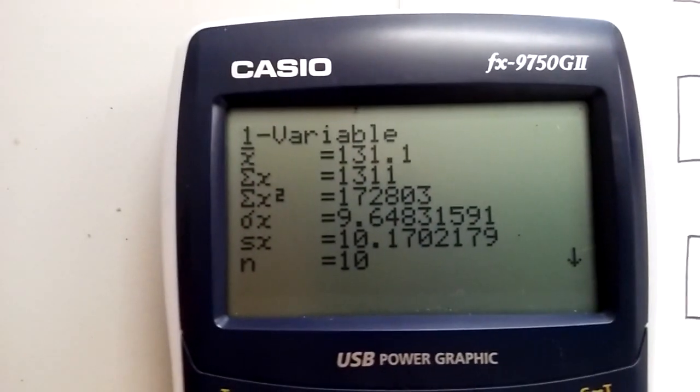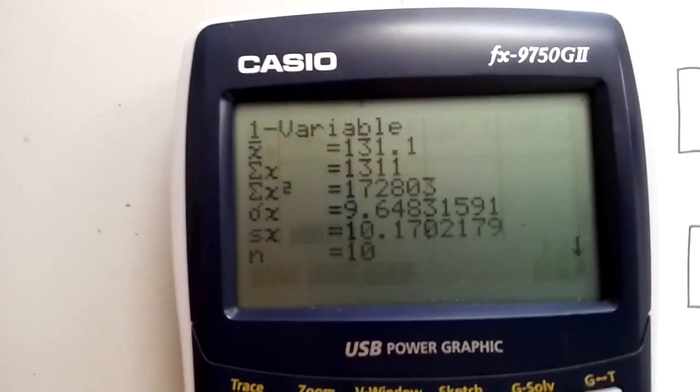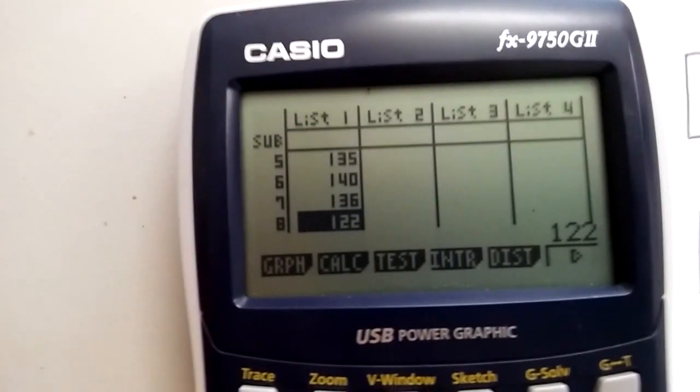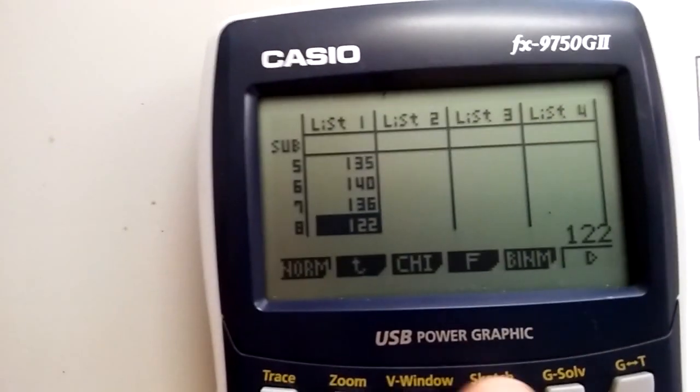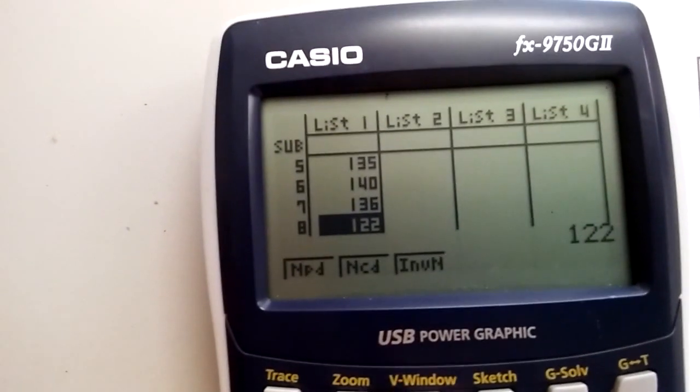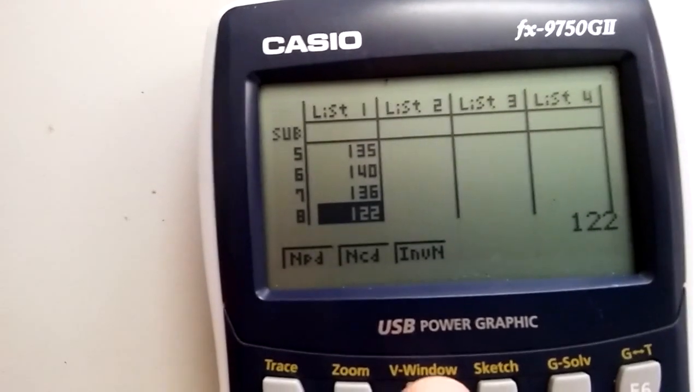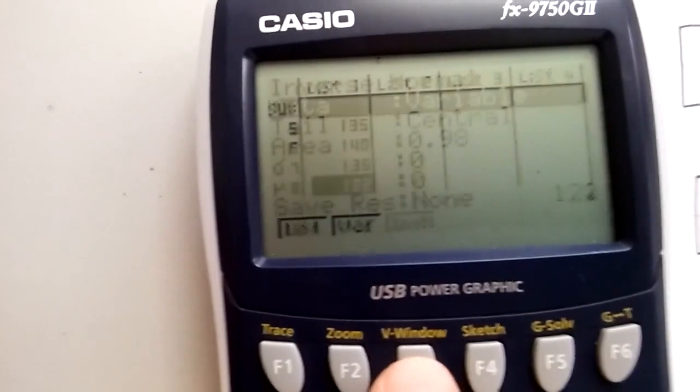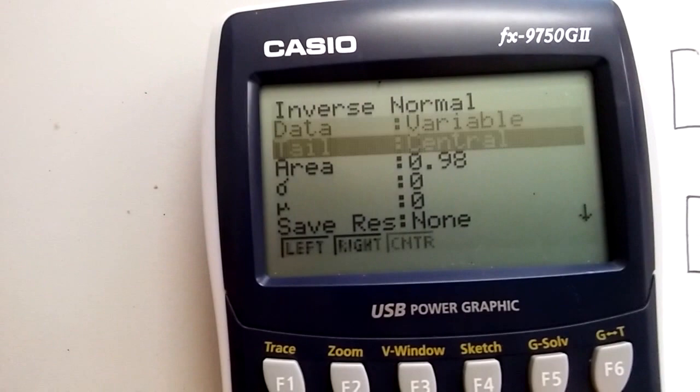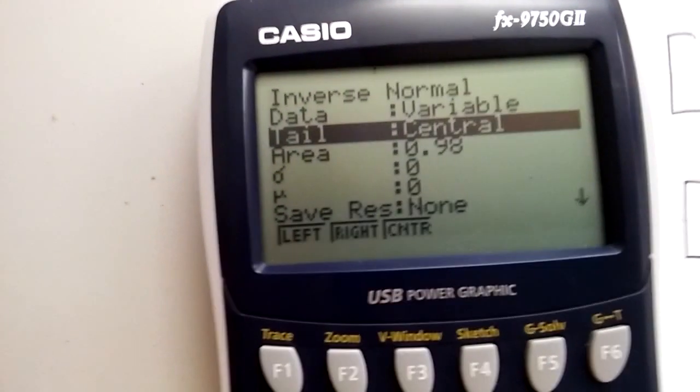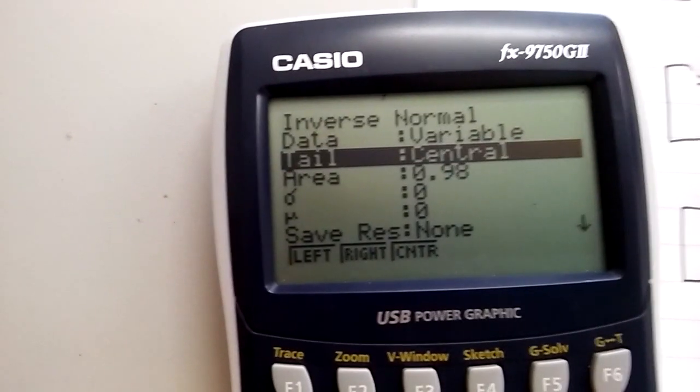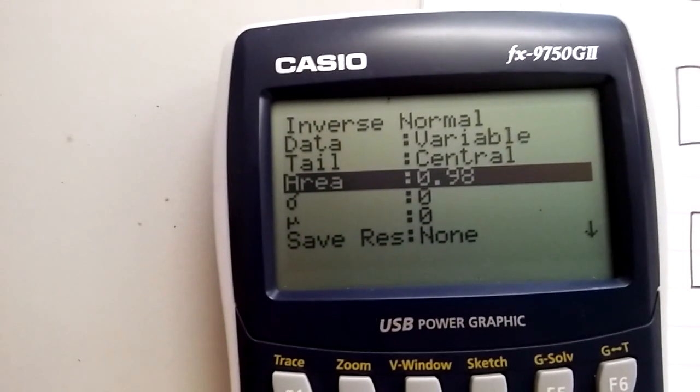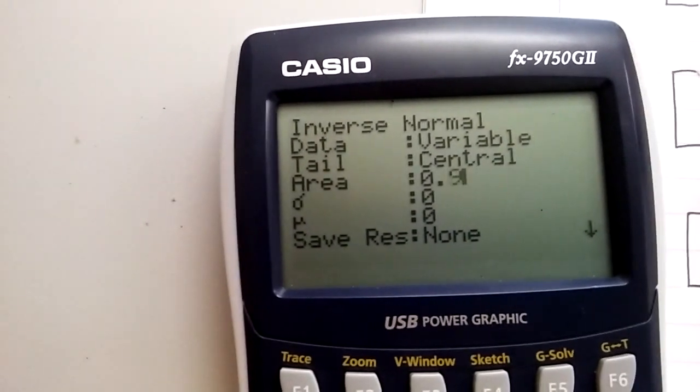If you remember, the only way to get a Z value is inverse normal. So we need to exit a few times. And then press distribution. And normal and inverse button. The only one we're allowed to press on this, F3. And now we change these things. We want the tail, because it's confidence interval, to say center. And because we're after 98% confidence interval, we need to put 0.98.